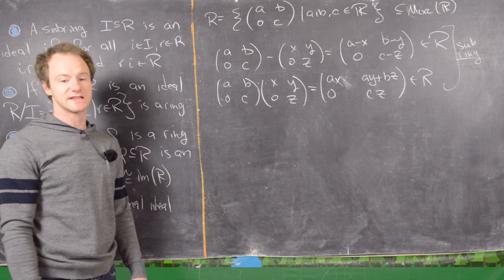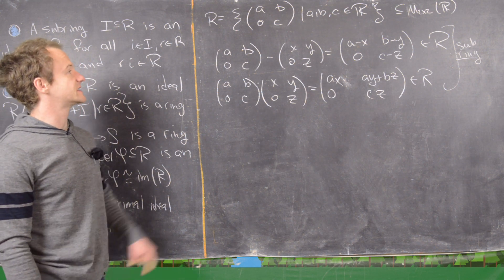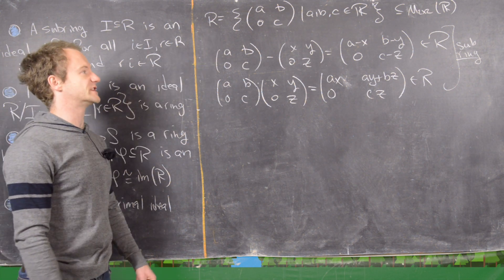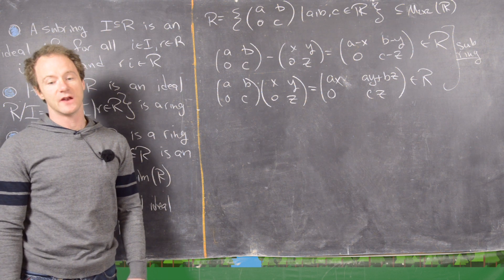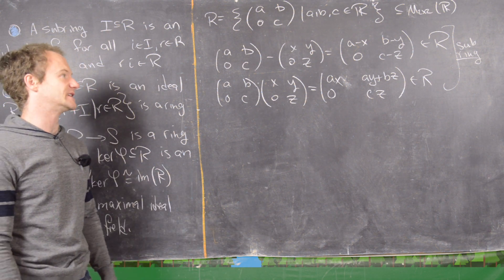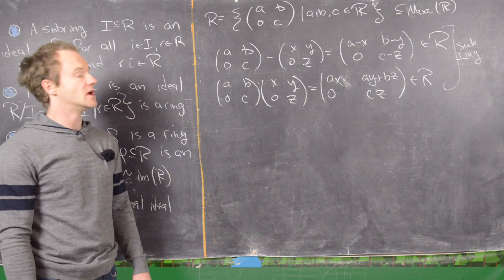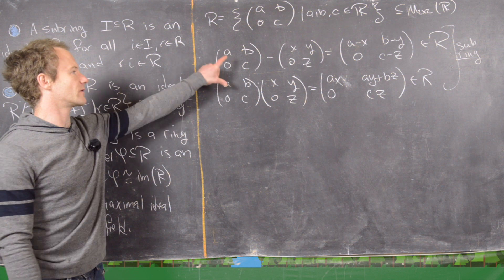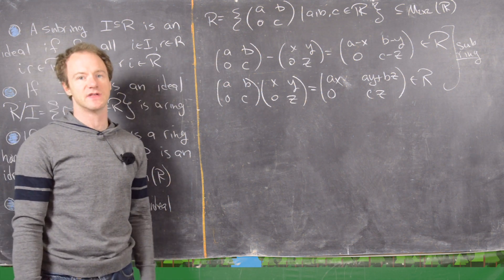The next thing we want to do is consider an ideal of this ring R. We'll first show that it's an ideal and then look at the quotient ring.